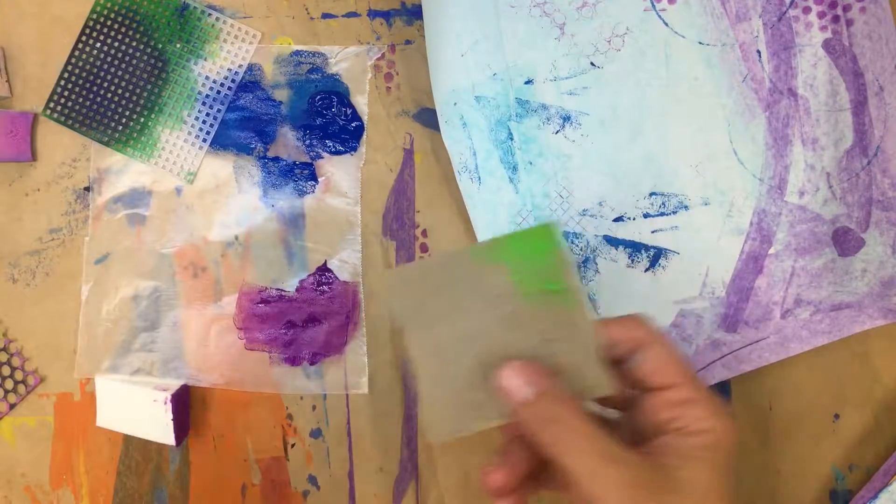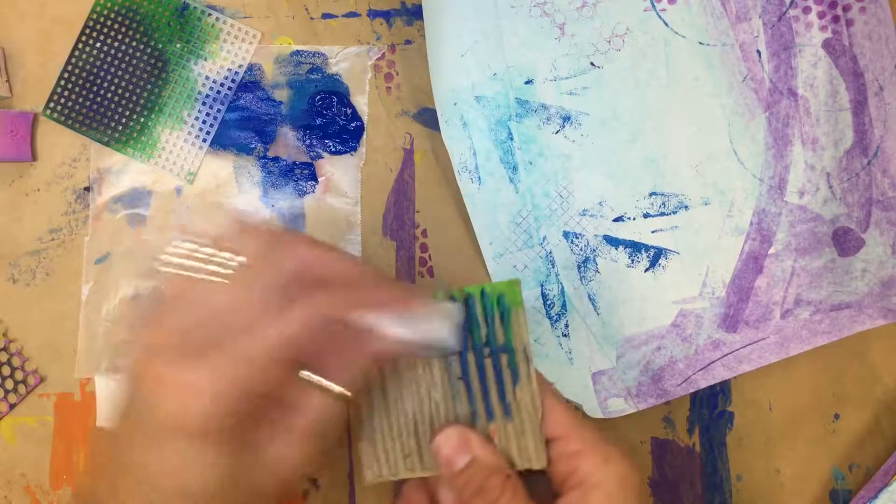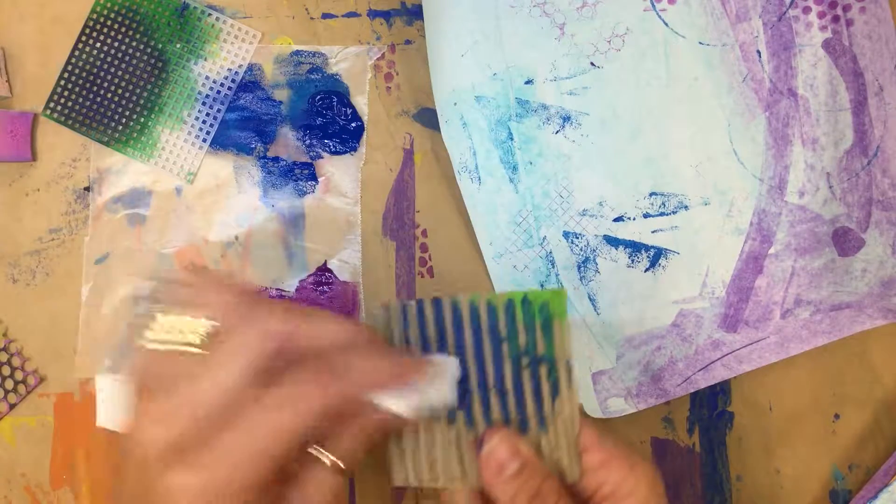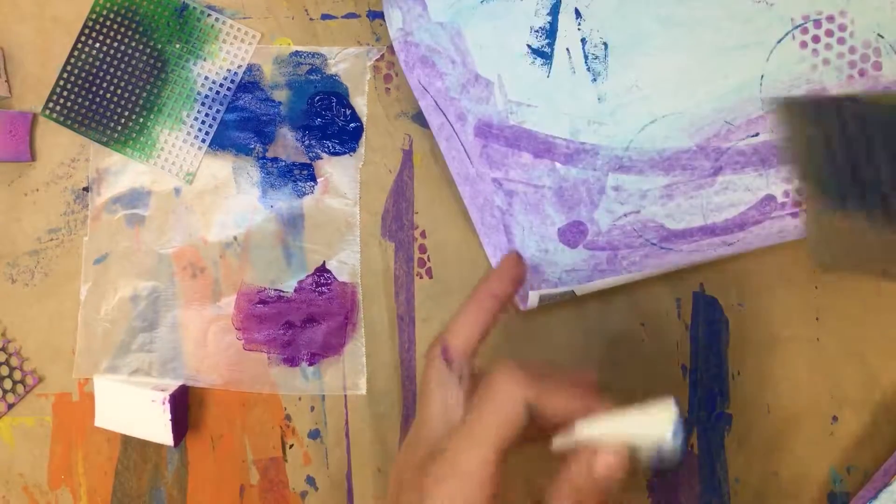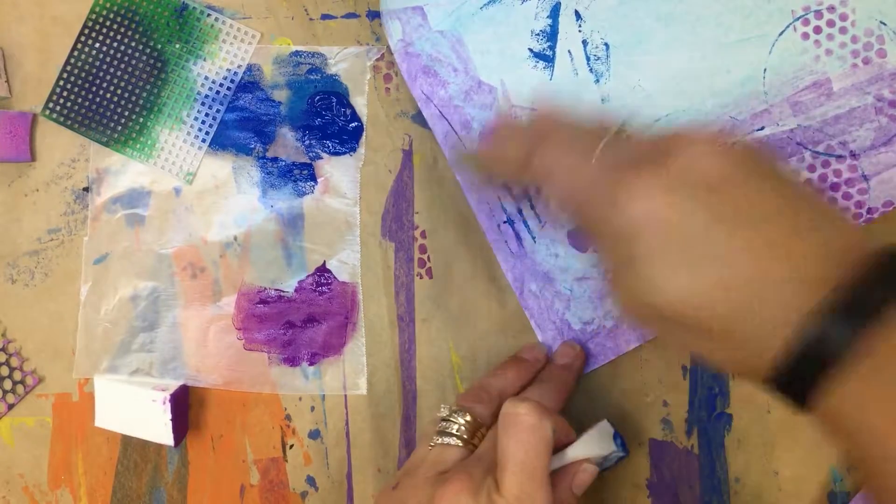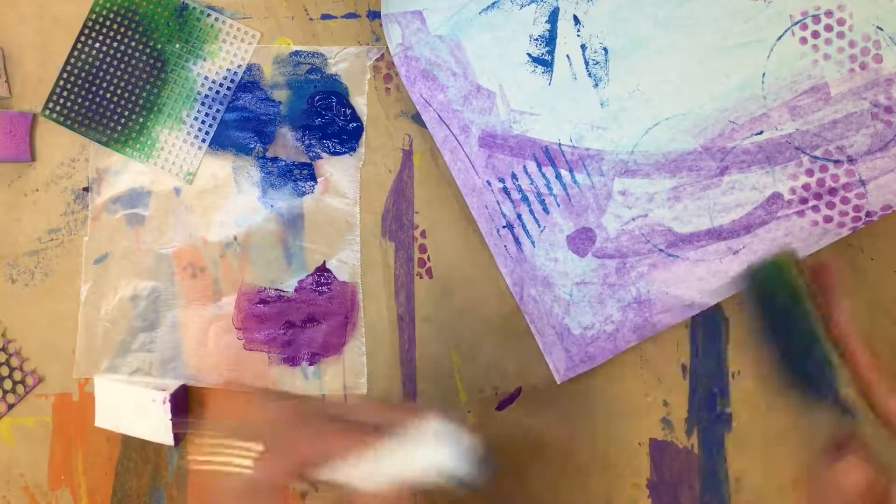Have those stamped on there. And the cardboard piece—cardboard you're going to stamp right on there, and it's going to have lines, so it's kind of fun. You can move around through your different papers. Depending on what color you have, some colors will show up better than others, so try it out.